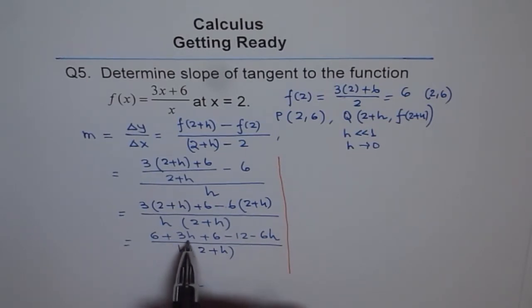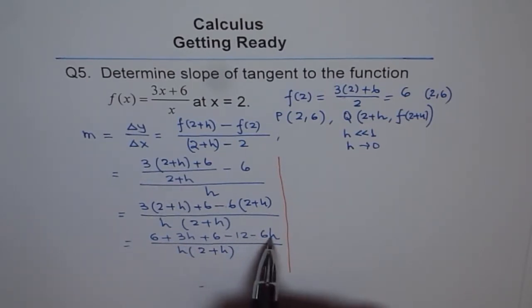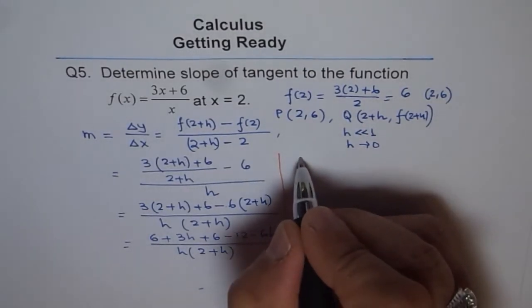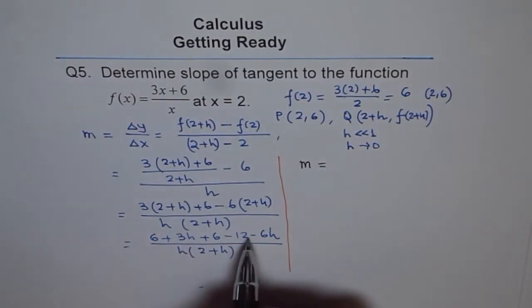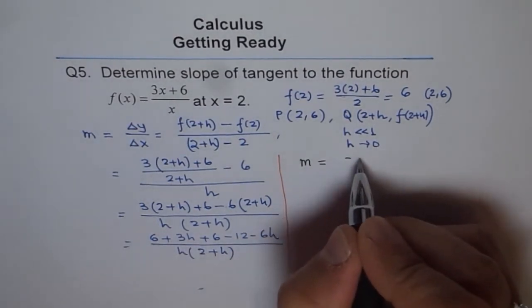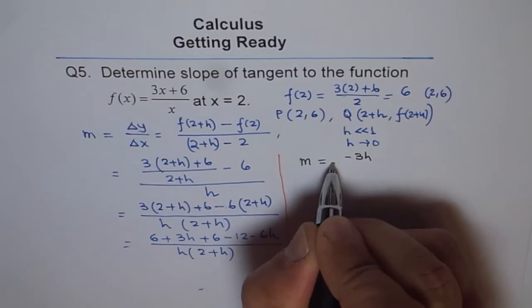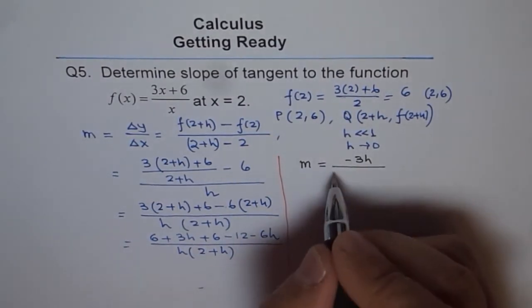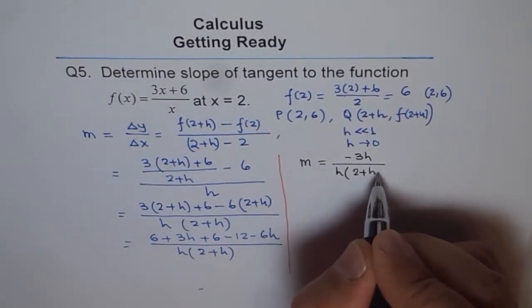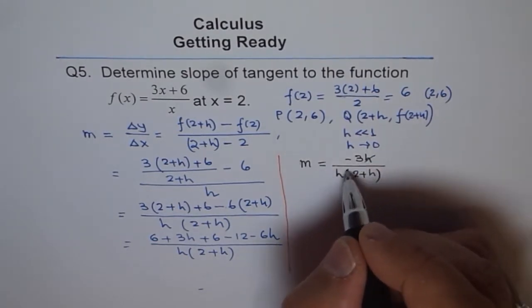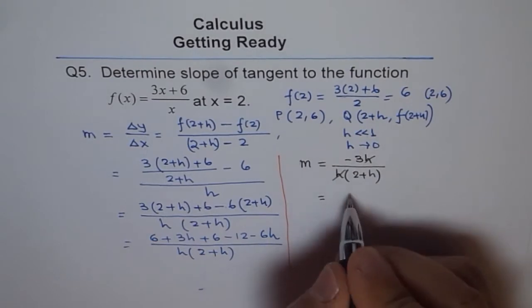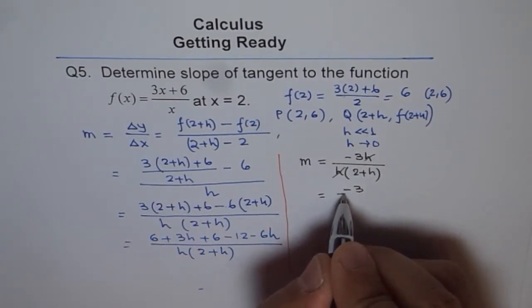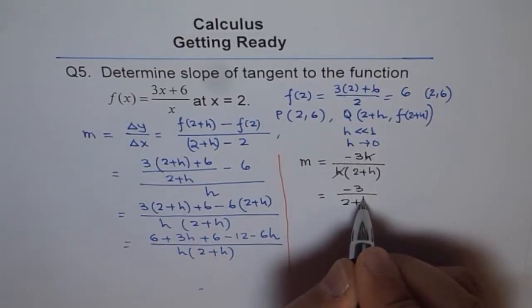6 plus 6 is 12 and 12 minus 12 is 0. Here we get 3h minus 6h, which is minus 3h. So I will write m equals -3h divided by h(2 + h). From here, h and h cancel out, so we get slope equals -3 over (2 + h).